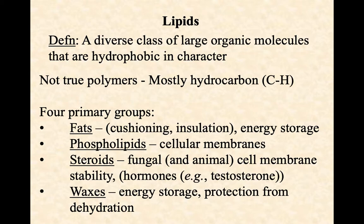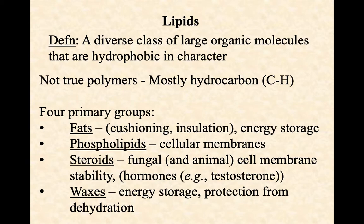There are four primary groups of lipids. Fats are really important in animals and humans — think about cushioning and insulation, allowing animals to live in places like Chicago or the Arctic. In microorganisms we don't see fats used for cushioning or insulation, but they are very important energy storage compounds. Fats are actually a more efficient way to store high-energy electrons than sugars, which is why all living things — including microorganisms — store fat when food is abundant.